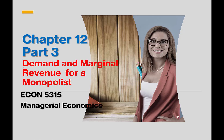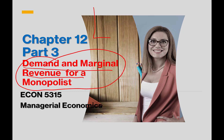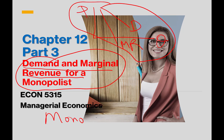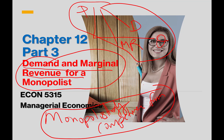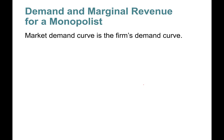This is Chapter 12, Part 3. In this part we are talking about the demand curve and marginal revenue curve for the monopolist. We'll talk about this downward sloping demand curve and marginal revenue curve just below it. This will also apply to monopolistically competitive firms, so this part will pertain to both market structures. Let's get started — the market demand curve is going to be the firm's demand curve.